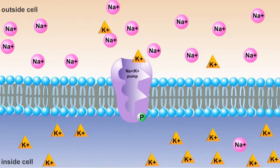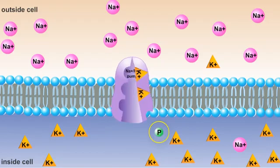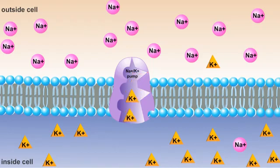Next, two potassium ions position themselves within the carrier protein, causing it to undergo another change in shape. In the process, the phosphate molecule is released. Once the phosphate molecule is released, the carrier protein expels the potassium ions into the interior of the cell. The carrier then resumes its initial shape, completing the cycle.